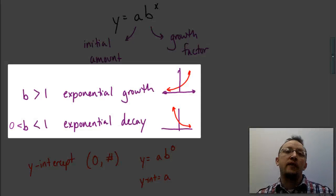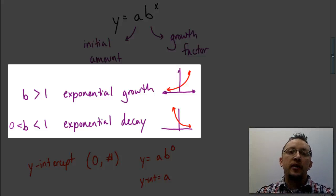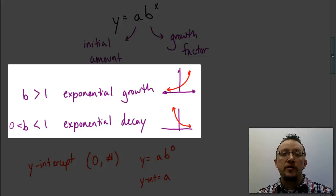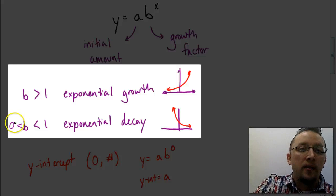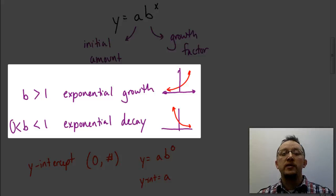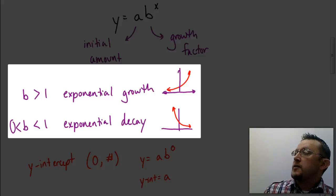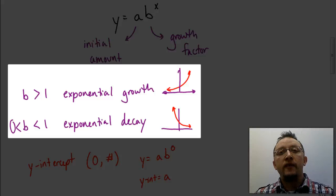The growth factor tells us whether the graph is going to be increasing or decreasing over time. When b, our growth factor, is greater than one, the graph represents exponential growth — it's going to be increasing over time, as x increases the graph also increases. When b is between zero and one, the graph represents exponential decay, similar to depreciation in story problems, meaning the graph is going to be decreasing in value over time.